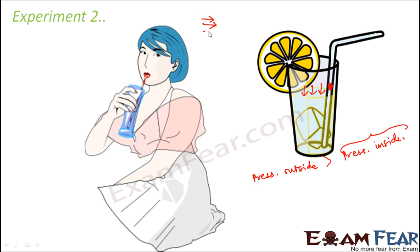From one side you have more pressure, and from the other side you have less pressure. An object in between will experience a net pressure in the direction of the greater pressure. The same holds true here — since the pressure outside is more, the liquid moves up through the straw due to that increased pressure outside.